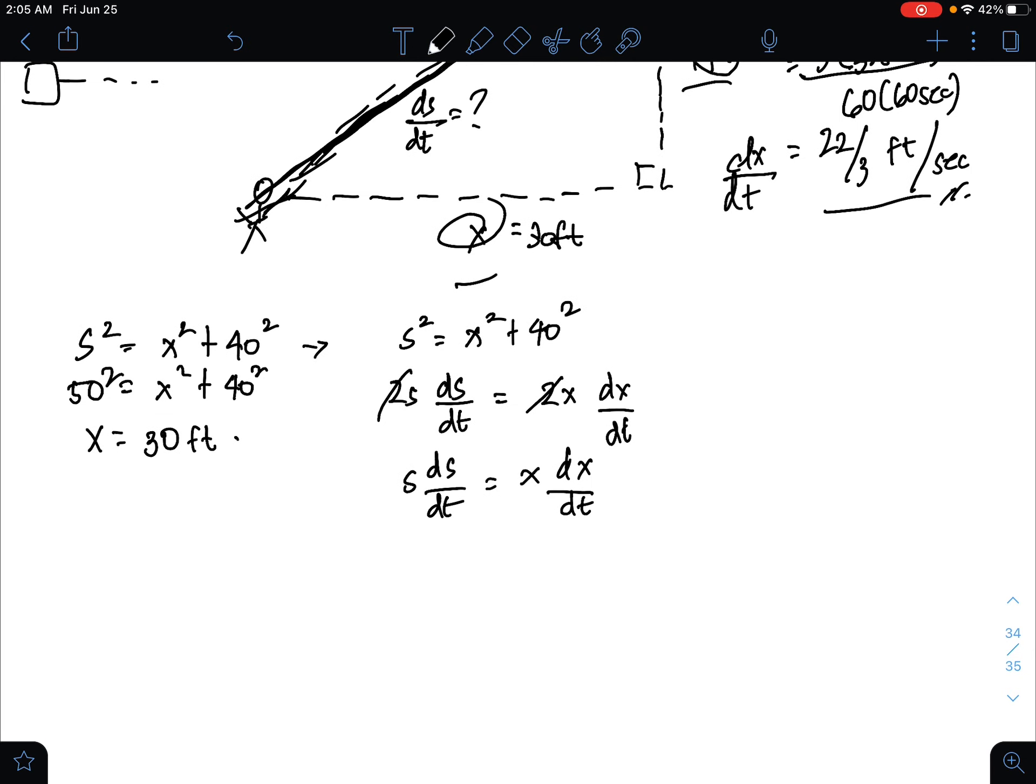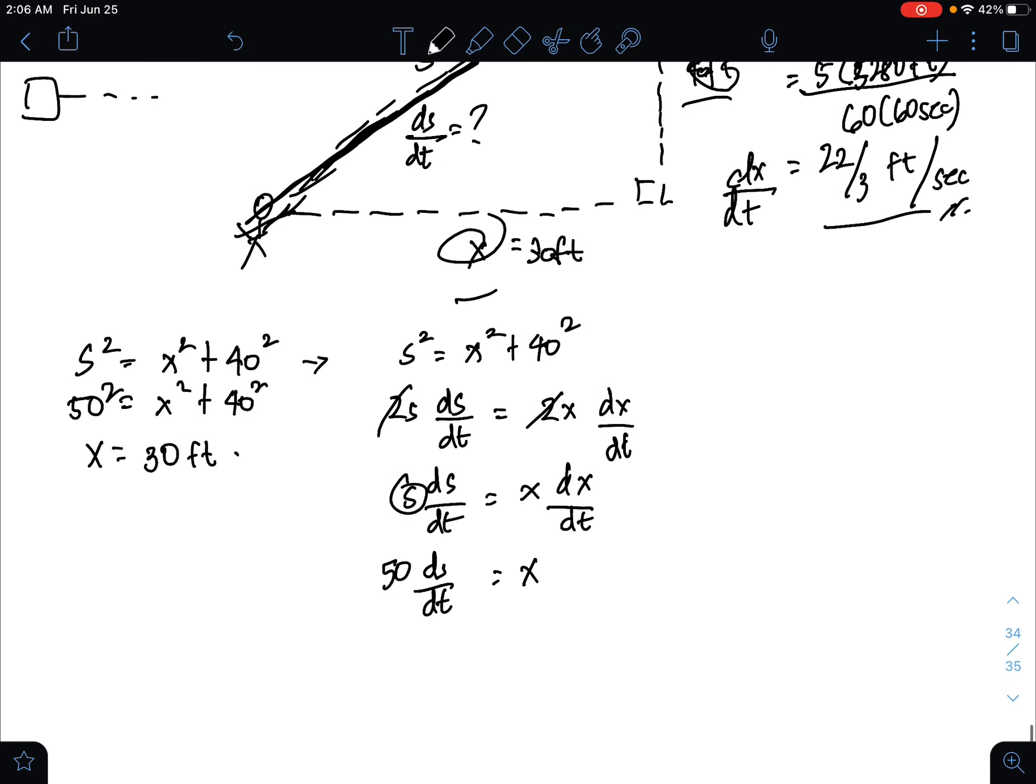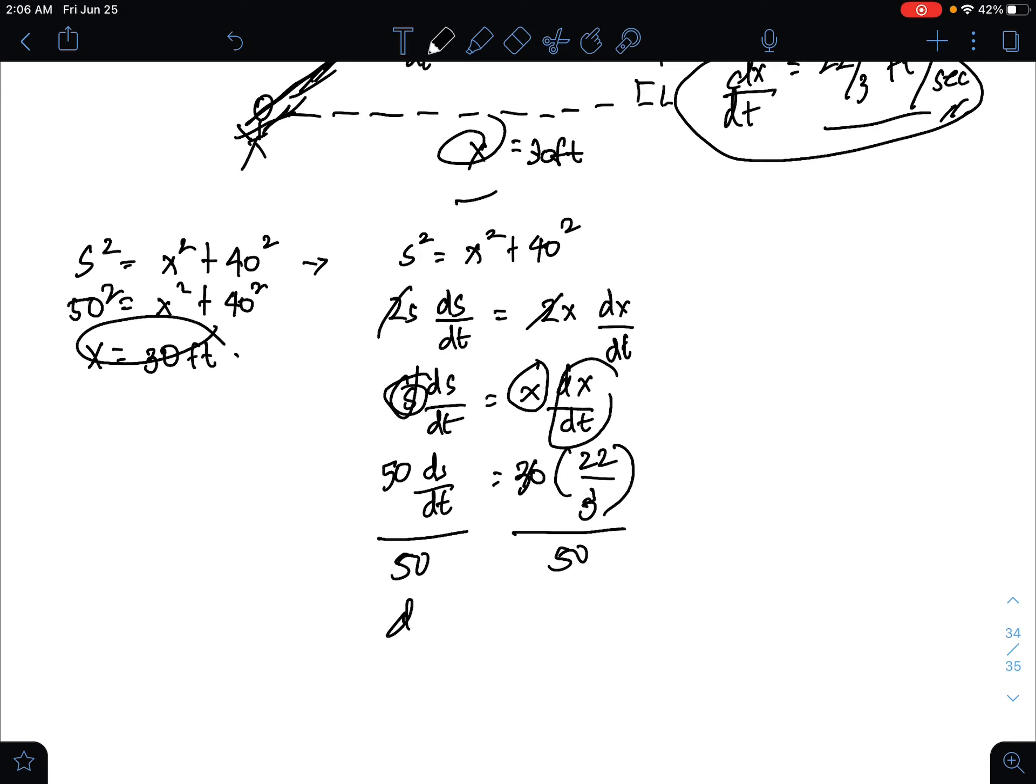Go back here. S here is 50. 50 dS over dt. X is 30. Then dX over dt which is 22 over 3. We can now solve for dS over dt. By calculator, 30 times 22 over 3 all over 50. That would be 4.4 feet per second. And that is your final answer.